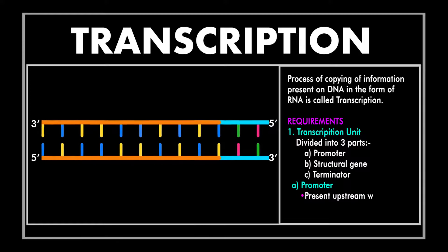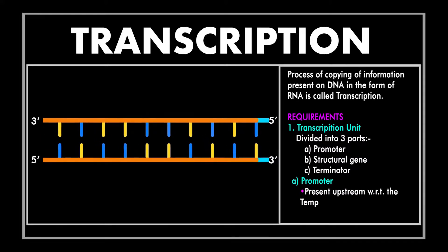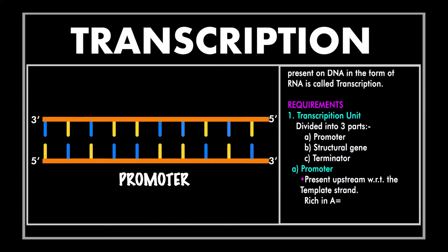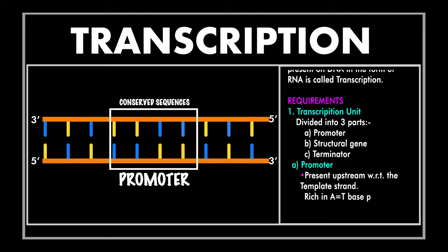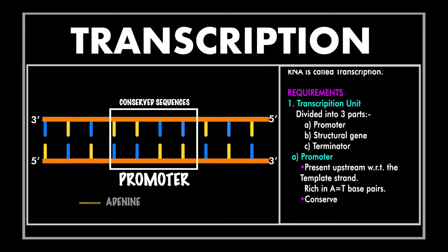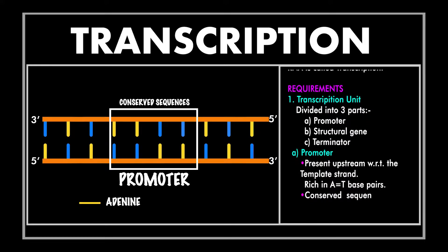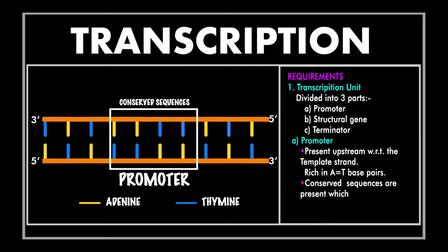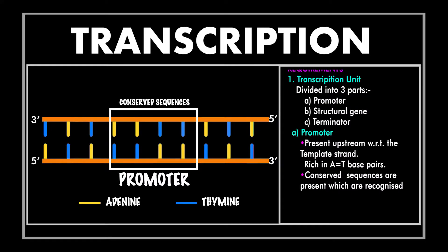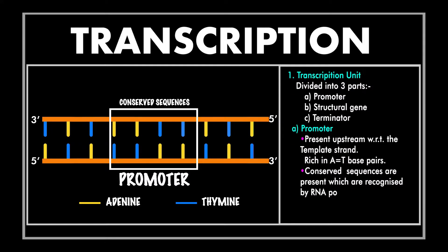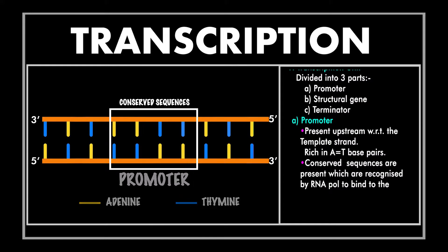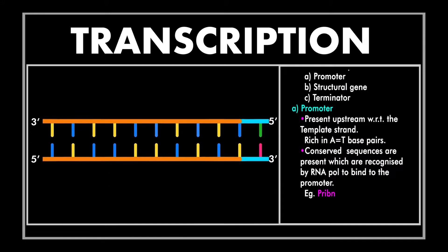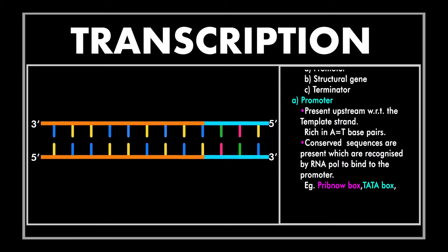The first part is called the promoter region, which is present in the upstream region with respect to the coding strand. This promoter region consists of conserved sequences which are recognized by the enzyme RNA polymerase. These conserved sequences are regions rich in AT base pairs. Some of these conserved sequences are the Pribnow box in prokaryotes, which consists of six nucleotides, and another type is the TATA box, also called the Hogness box, which consists of repeating units of DNA nucleotides.